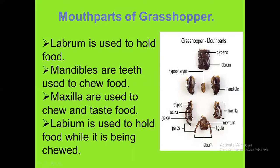Mandibles are two arms used to chew food. They have some black-colored teeth called denticles, which help to cut and grind food.